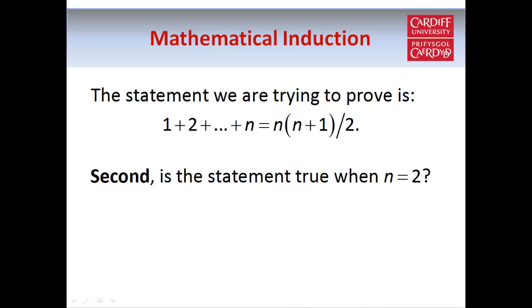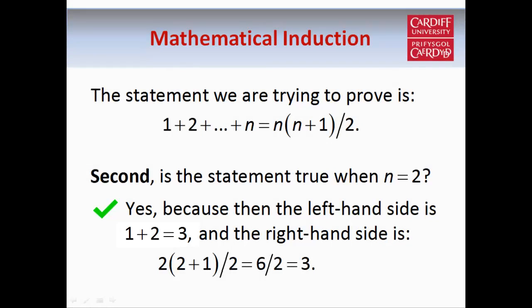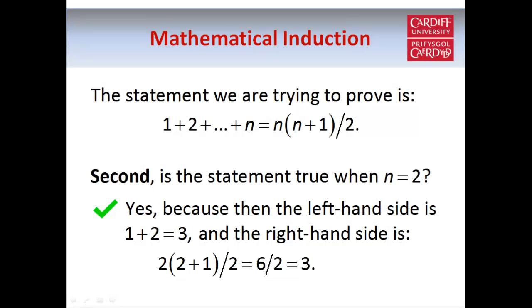If you look at what happens when n equals 2, then on the left-hand side we have 1 plus 2, which is 3, and on the right-hand side we have 2 times 3 over 2, which also gives 3. So the statement holds when n equals 2 also.